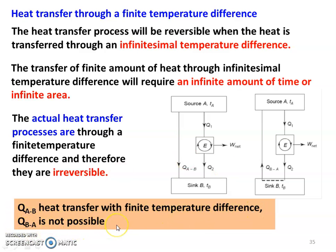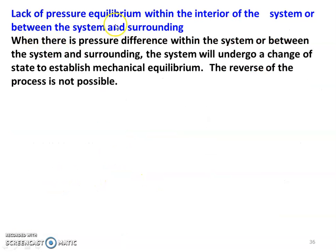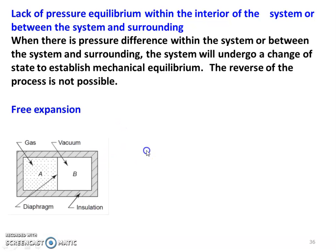The second reason is lack of pressure equilibrium within the interior of the system, or between the system and the surrounding. The process will become irreversible when there is a pressure difference within the system or between the system and the surrounding. The system will undergo a change of state to establish mechanical equilibrium. The pressure difference creates a mechanical imbalance, and the reverse of the process is not possible, so it is irreversible.